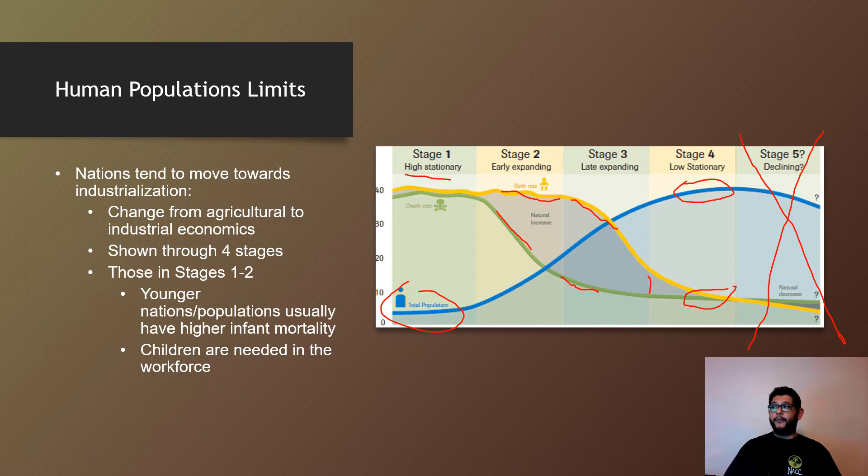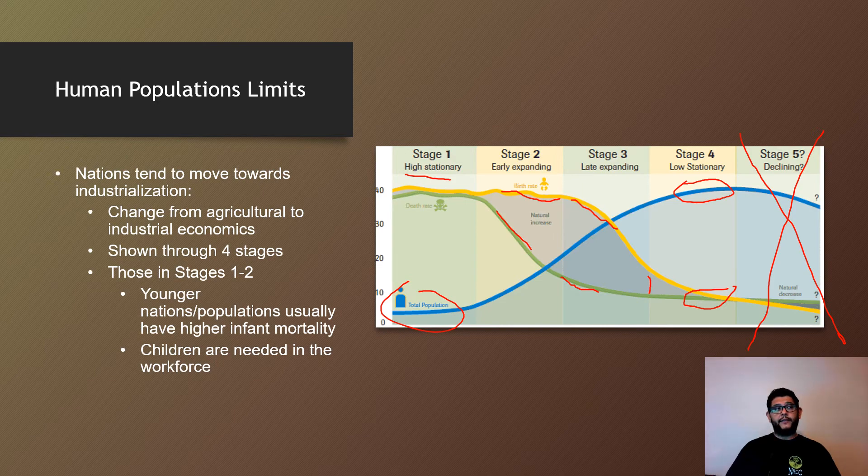That would be for human geography, but for us we pretty much top out at stage four. Stage five is where population would begin to decline a little bit—that's your heavier, more developed populations.